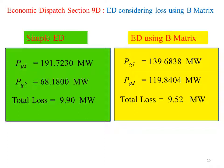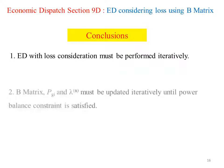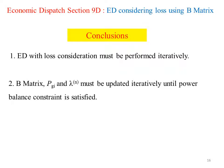In conclusion, economic dispatch with loss consideration must be performed iteratively. B matrix, P_GI, and lambda must be updated iteratively until power balance constraint is satisfied.